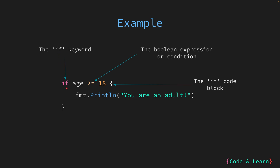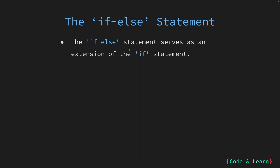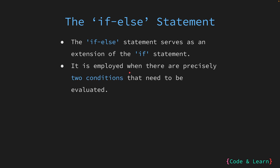Just to revise: we start the if condition with the if keyword followed by the Boolean expression, followed by the if code block in the curly braces. The if else statement is a continuation or extension to the if statement we saw earlier. It provides an alternative path of execution when the condition in the if statement evaluates to false. The if else statement is suitable when there are exactly two conditions that need to be evaluated. It allows the program to take one of two actions based on whether the condition is true or false.